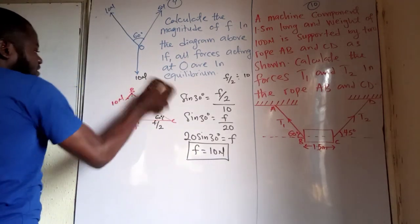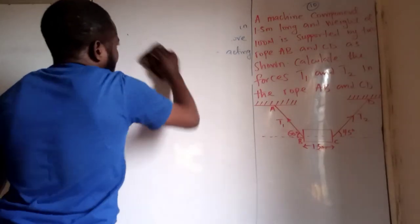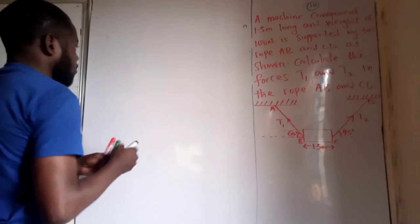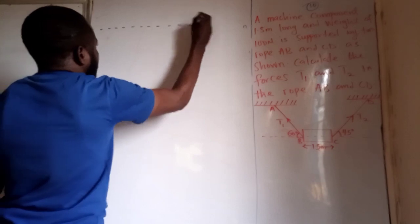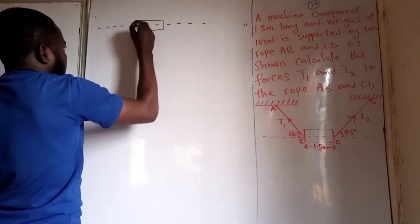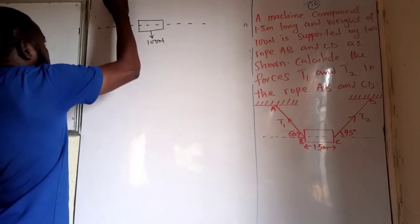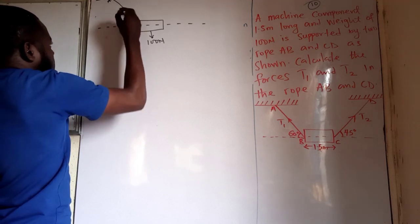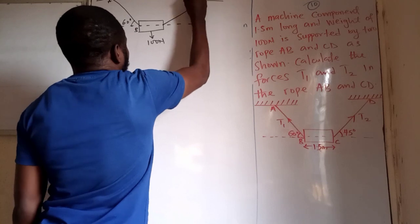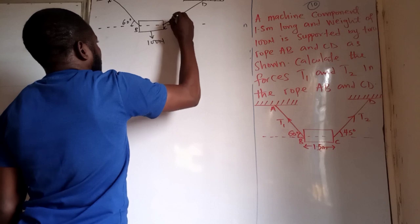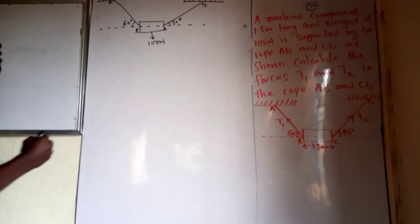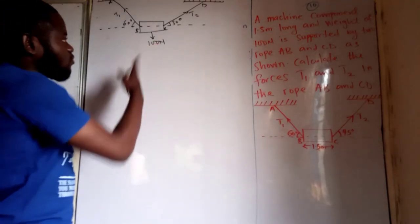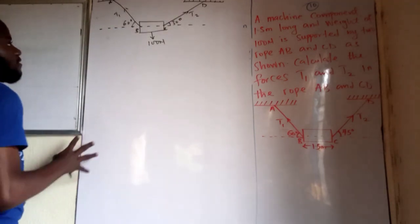I will redraw this diagram to show the weight, which is 100 newtons. In my new diagram, this is the weight of the body — 100 newtons. This is rope CD at an angle of 30 degrees as shown in the question. Here is T2 and here is T1.